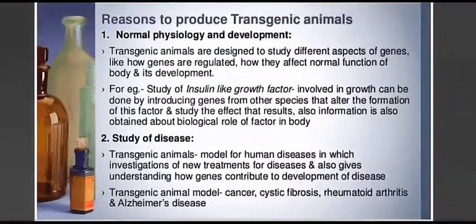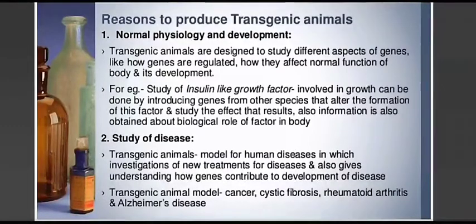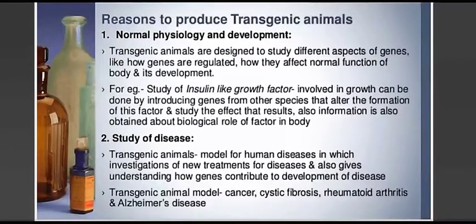Second, transgenic animals are models for human diseases. They can be used to study how human diseases actually develop in the body, investigating new treatments and understanding how genes contribute to disease development. Transgenic animals act as models for studying severe diseases like cancer, cystic fibrosis, rheumatoid arthritis, and Alzheimer's disease.